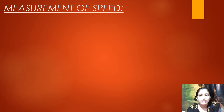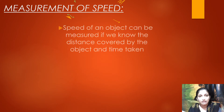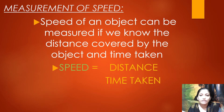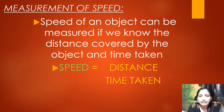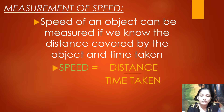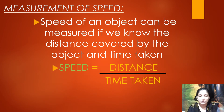Let us see how we can measure the speed. The speed of an object can be measured if we know the distance covered by the object and the time taken to cover that distance. So we can say that speed is equal to distance divided by time taken.